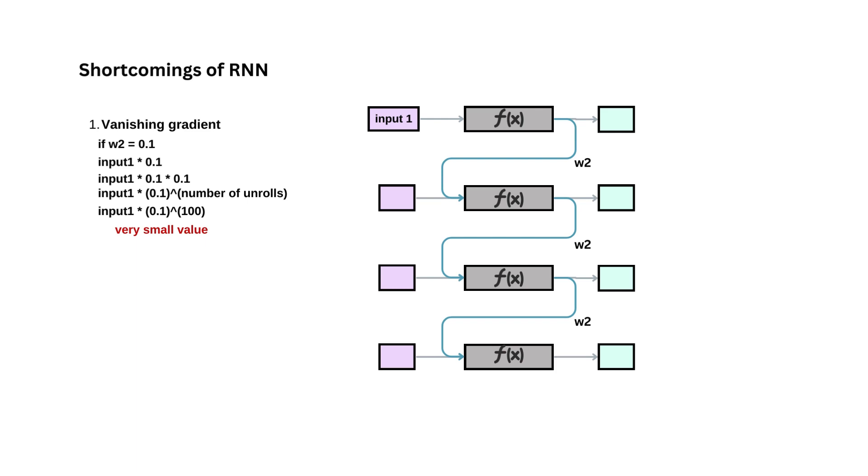Now, for 100 time steps, input 1 will be multiplied by 0.1 raised to power 100, which would be a very small value. This value will then be a part of gradient calculation and the parameter updates during training will be small too, leading to slower convergence and making it more challenging to find optimal weights. This problem is called vanishing gradient, which occurred here because value of W2 was less than 1.